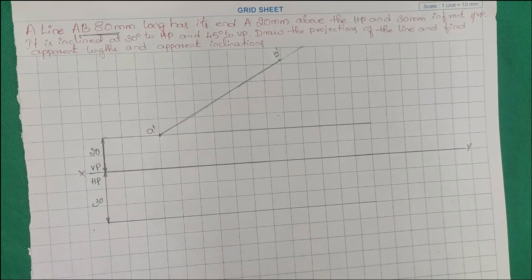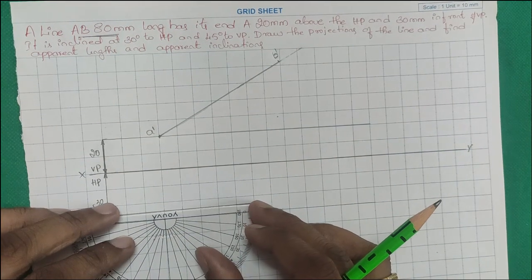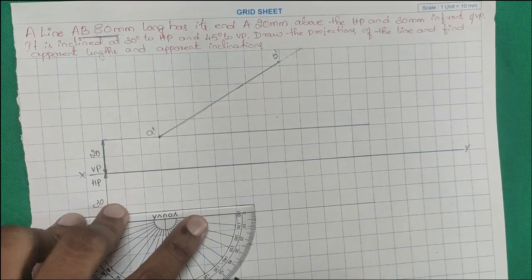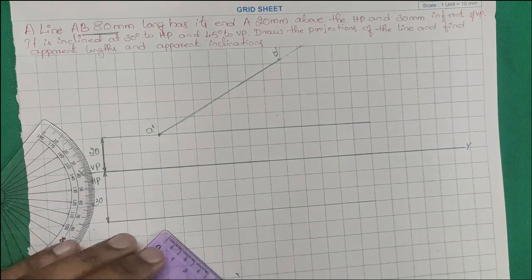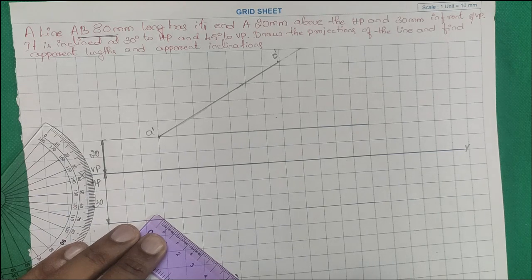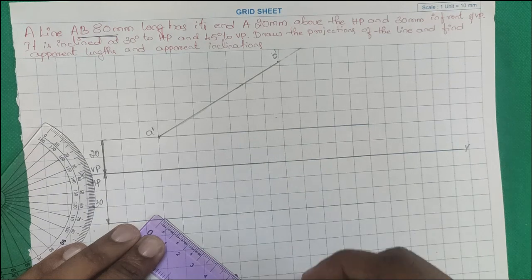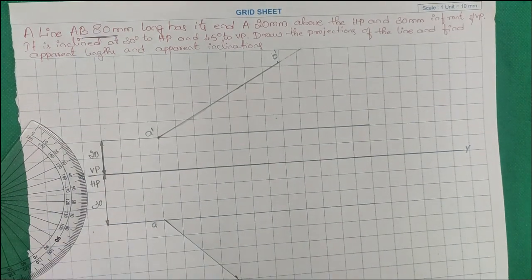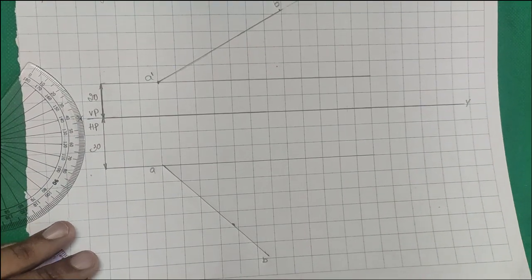Next, from the same point, we draw at 45 degrees to VP. Using the same 80 mm true length, we draw another line. This gives us point A and point B — these are our two endpoints of the line in the drawing.